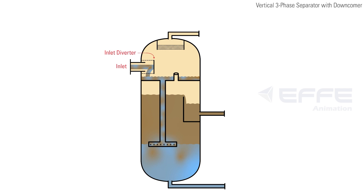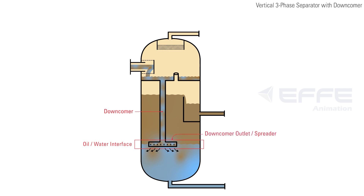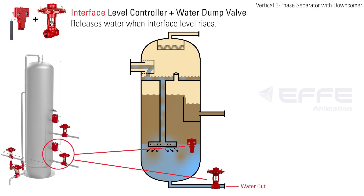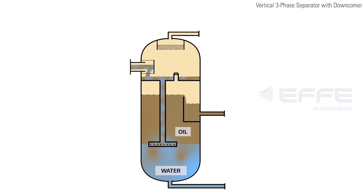In a vertical three-phase separator with a downcomer, flow enters the vessel through the inlet and is immediately met by an inlet diverter to help separate the bulk of the gas. A downcomer sends the liquid through the oil-water interface to keep from disturbing the fluid in the vessel. The downcomer outlet, or spreader, is located at the oil-water interface. Water, being heavier than oil, will separate and settle to the bottom of the vessel.